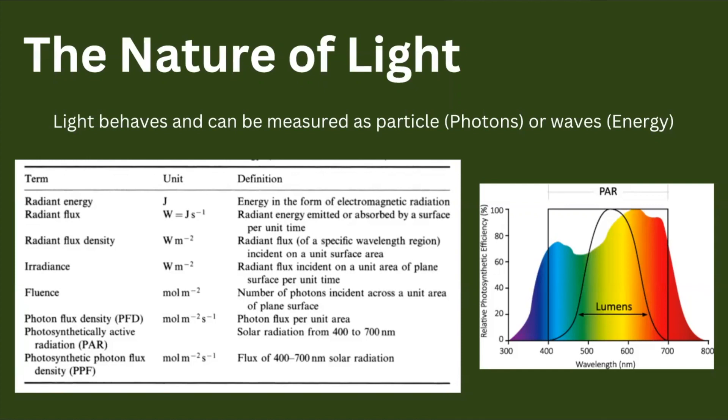In plants, we need to consider the photosynthetic active radiation (PAR), which is a measurement of photons of light that the plant is receiving within the range the plant utilizes for photosynthesis. When we think about light in plants, we probably think first about photosynthesis — we always link light to photosynthesis. However, photosynthesis is just one of all plant processes that are affected by light.